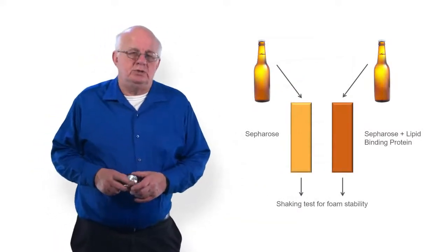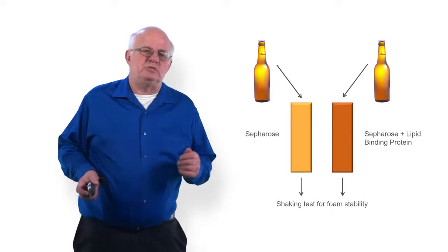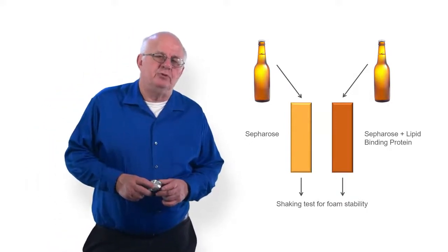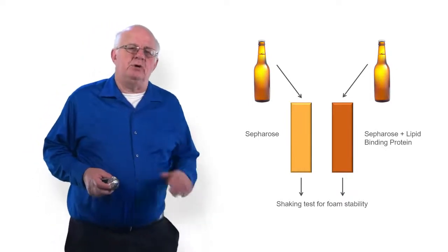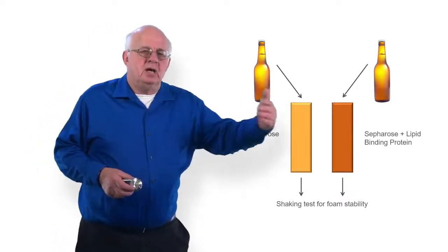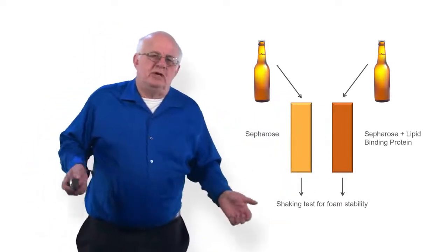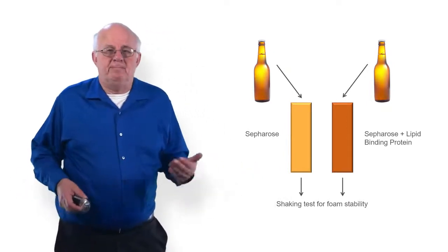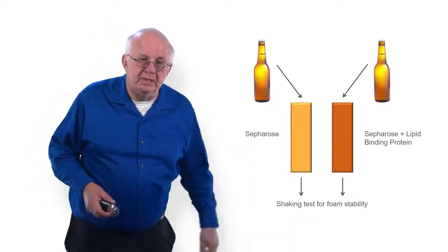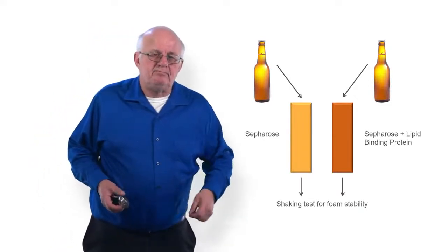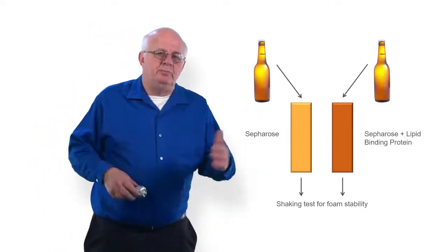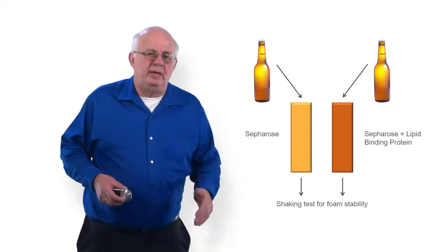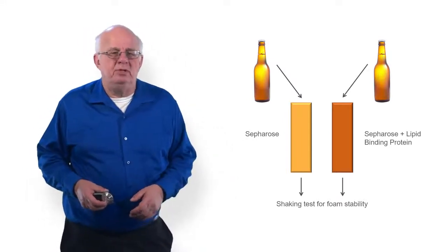Now, the second approach that we took involves columns that will specifically remove negative materials. And once again, we come back to our old friend, sepharose. You remember that when I talked about foaming polypeptides, I talked about sepharose attached to eight carbon units, octyl. You can also have sepharose and attach to it a lipid binding protein. It's actually bovine serum albumin, which is albumin from beef blood, basically. And that likes to bind lipids. So if you pour a beer through both columns, and if you've got foam negative material in that beer, lipid, it will attach to the column on the right, but not the column on the left.